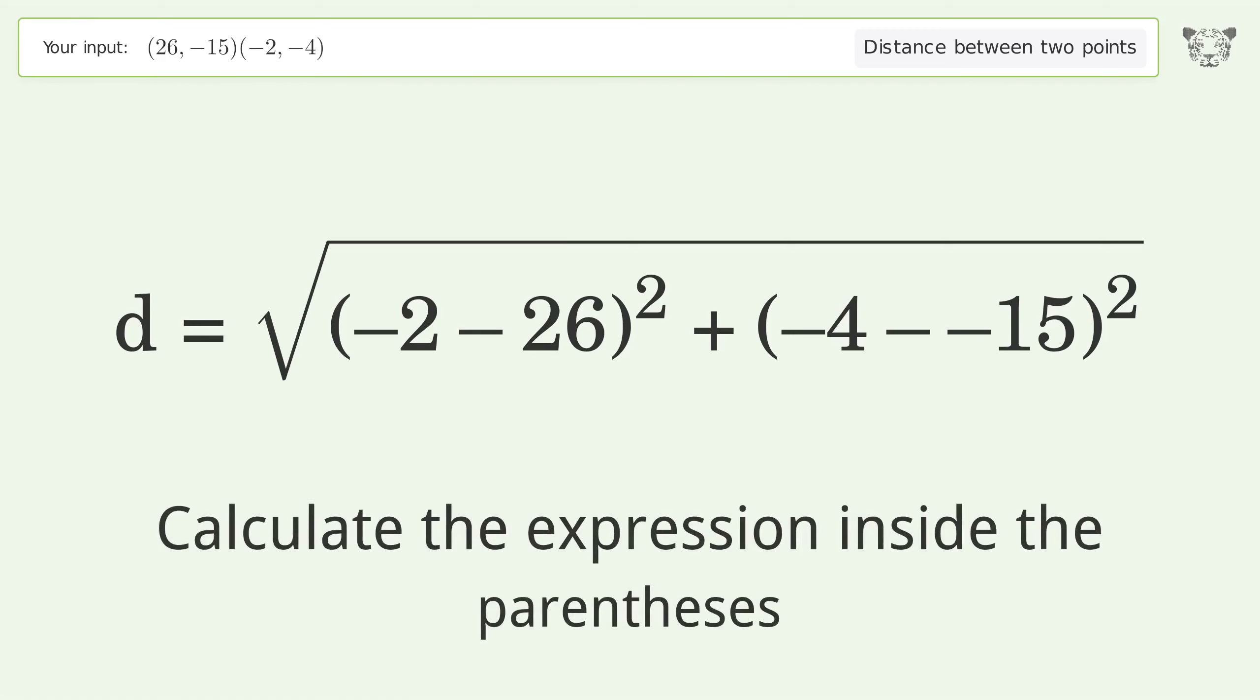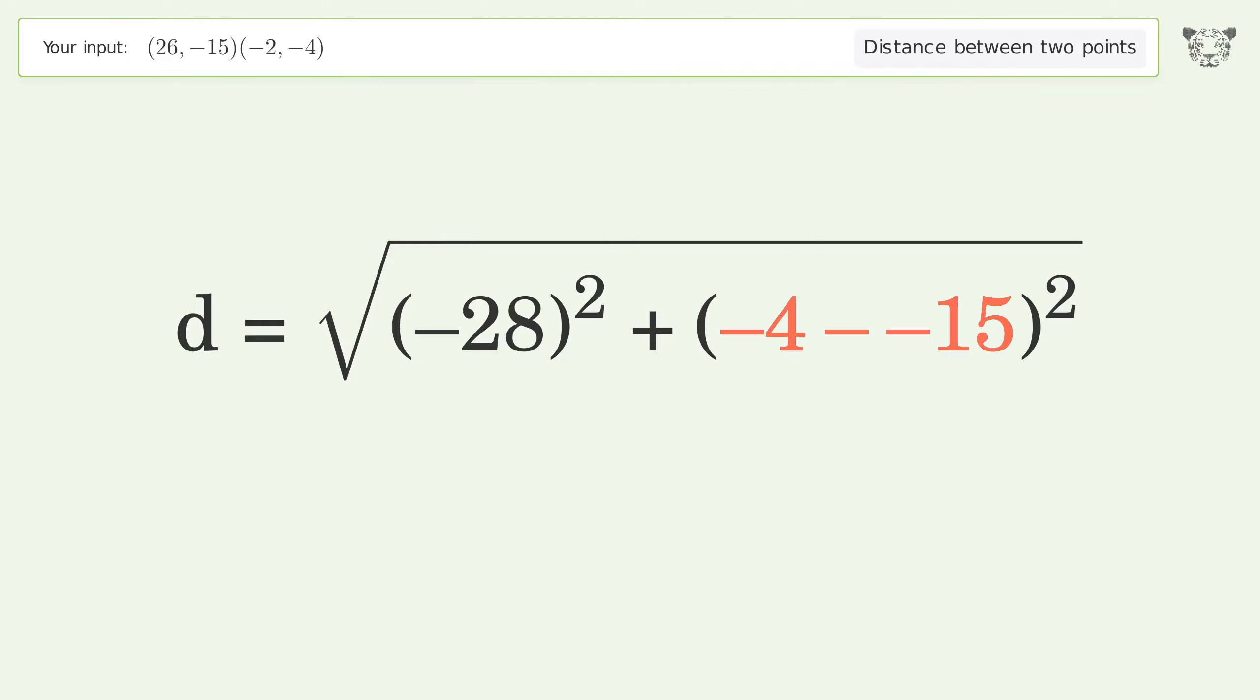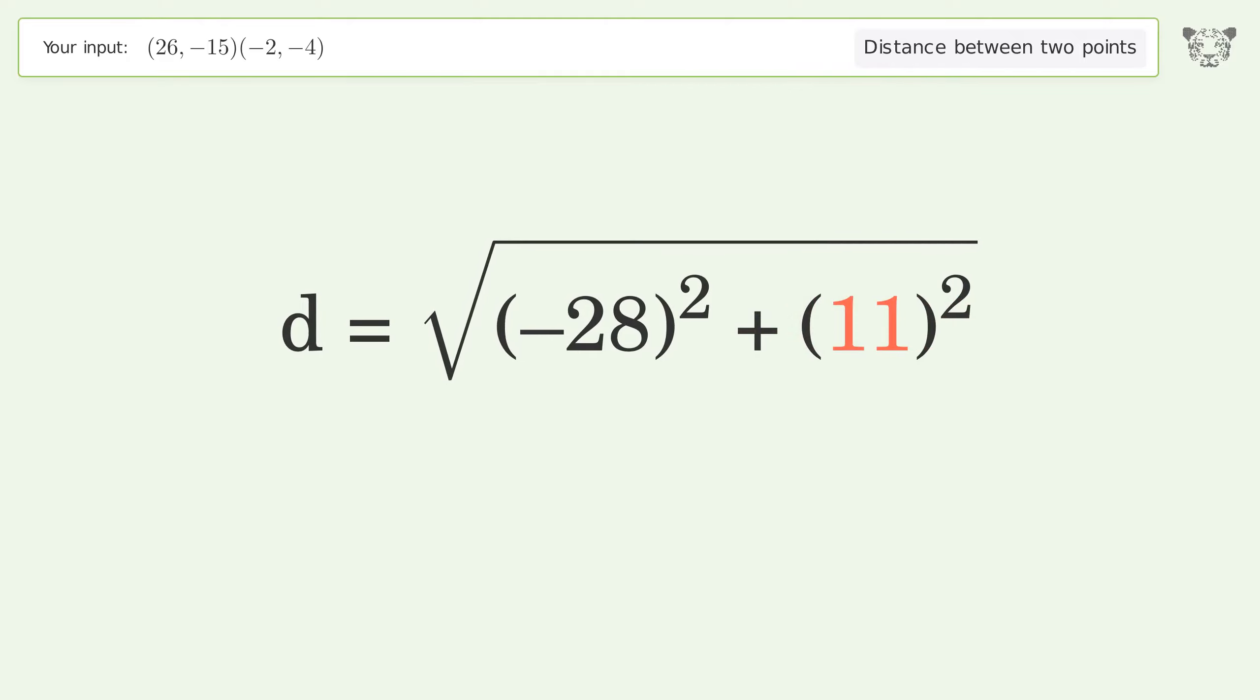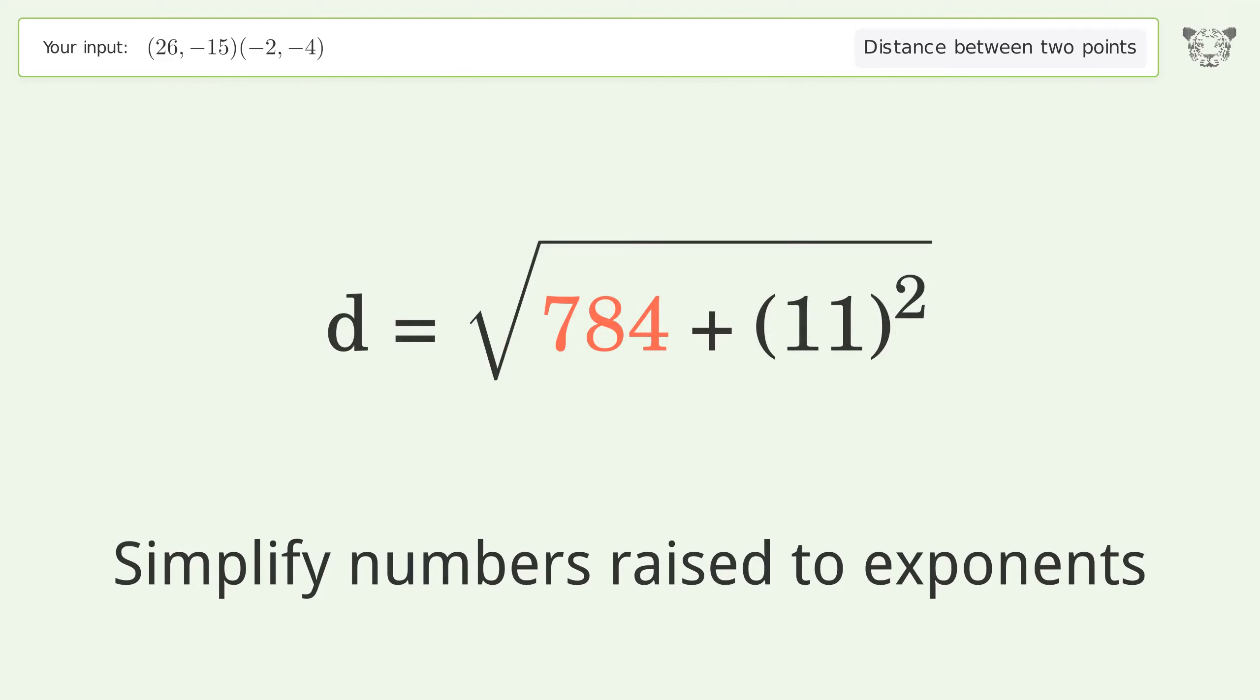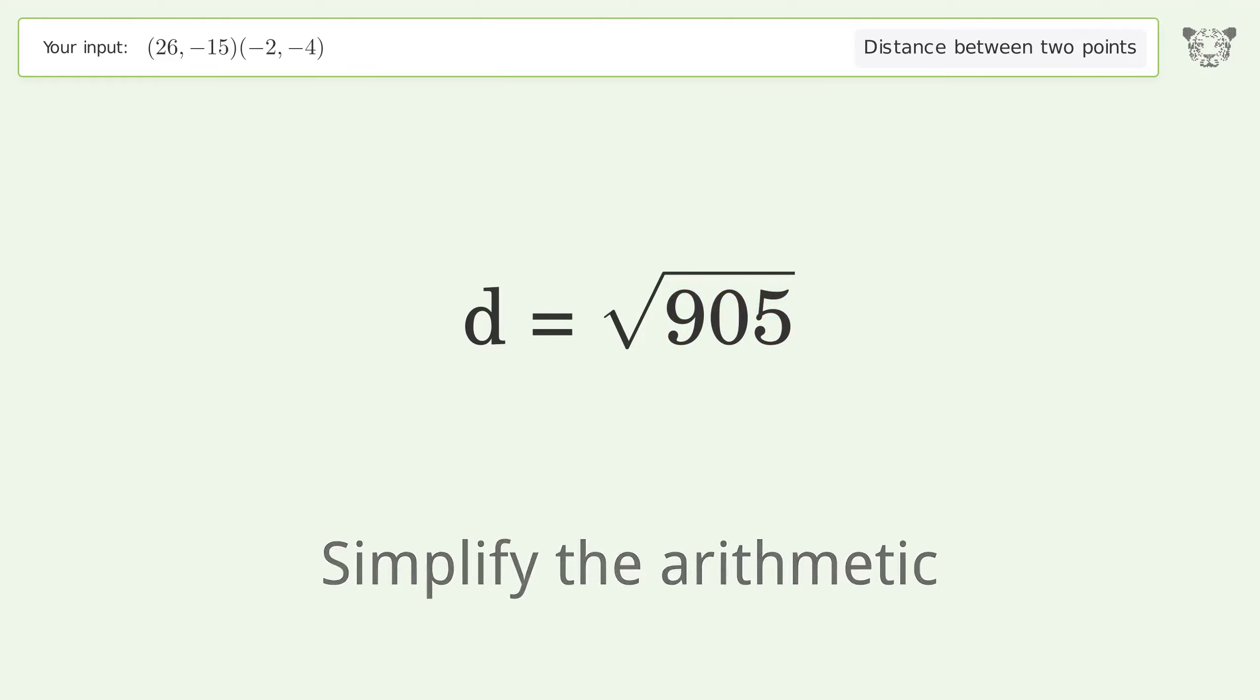Calculate the expression inside the parentheses. Simplify numbers raised to exponents. Simplify the arithmetic. And so the distance between the two points is the square root of 905 or 30.083.